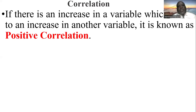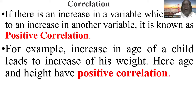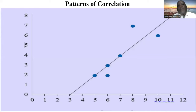Let me give an example of positive correlation. When we talk of positive correlation, take for example the age of a child. When the age of a child increases, the weight of the child also increases. Here we say that the age and the height are positively correlated.